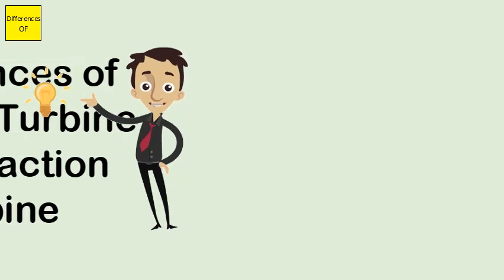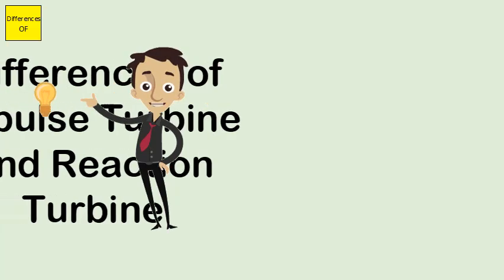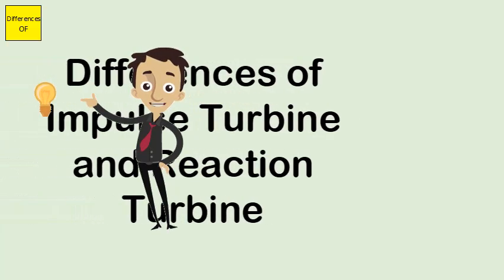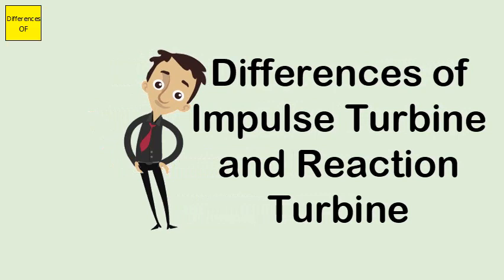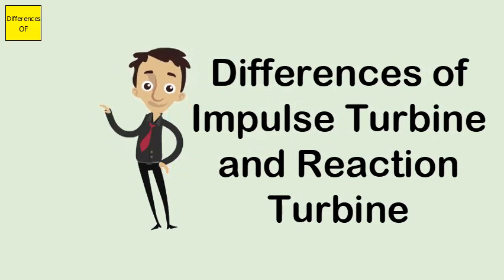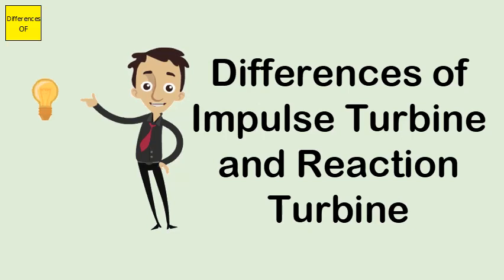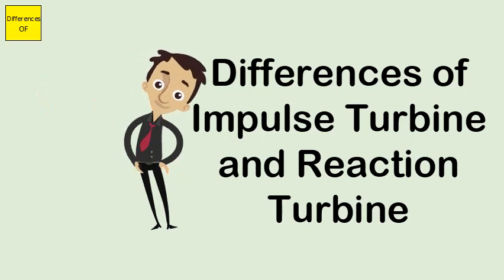Difference between impulse turbine and reaction turbine. In an impulse turbine, pressure and enthalpy drop occurs completely in the stator stage.